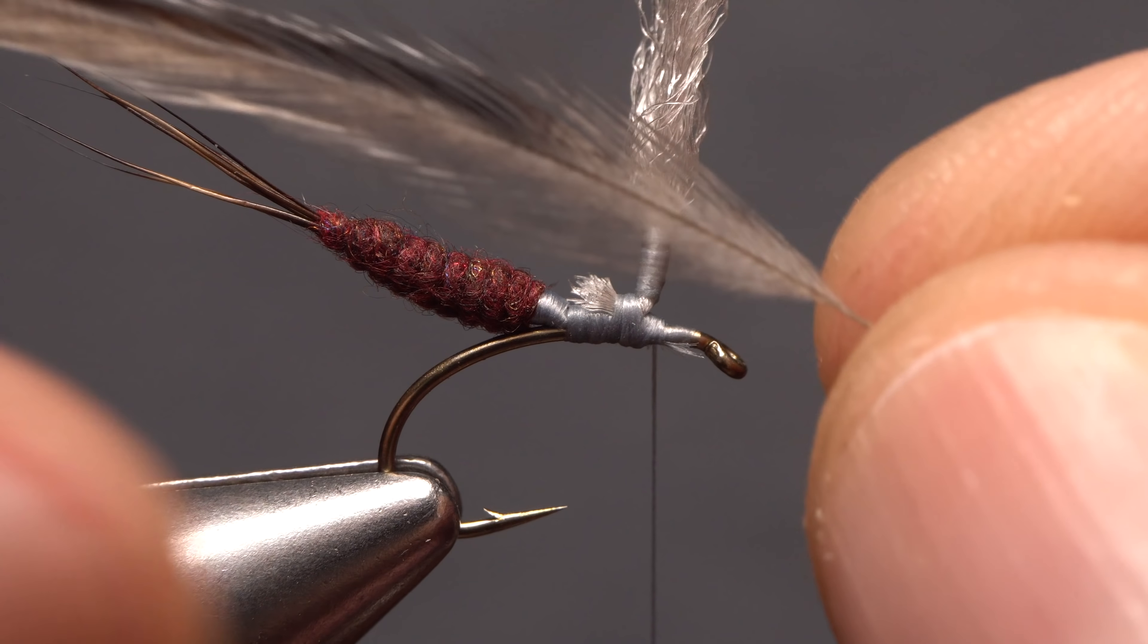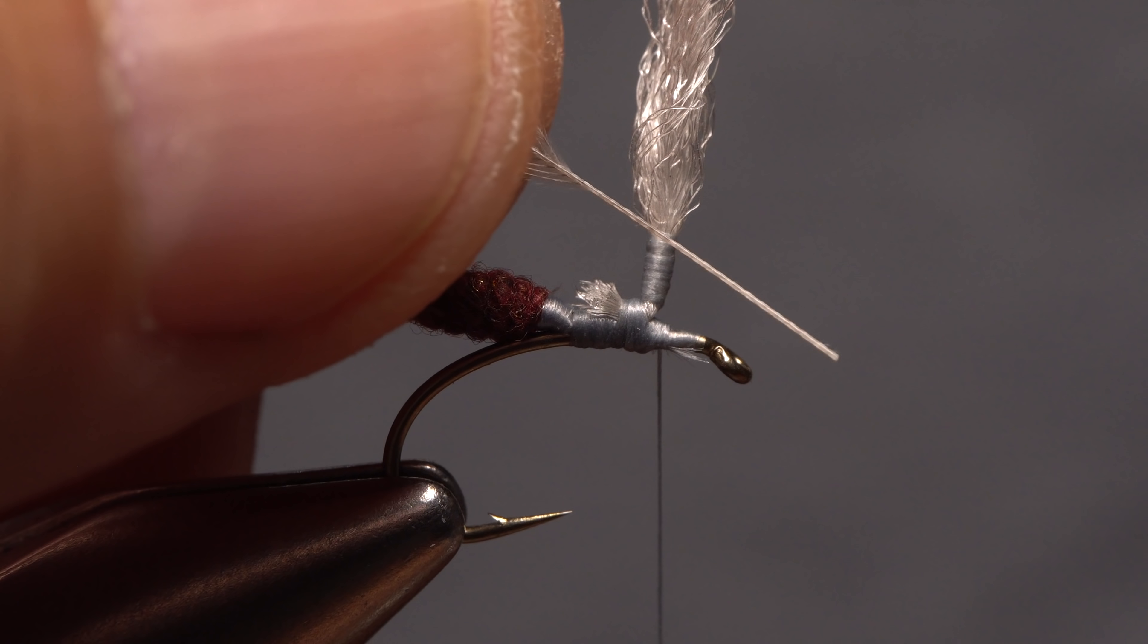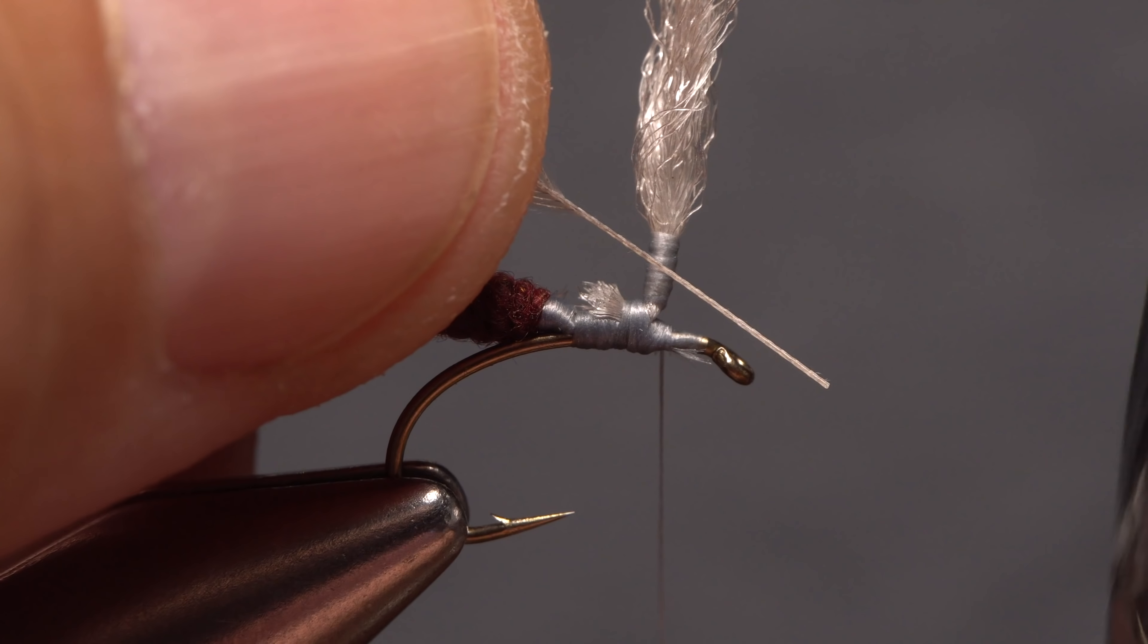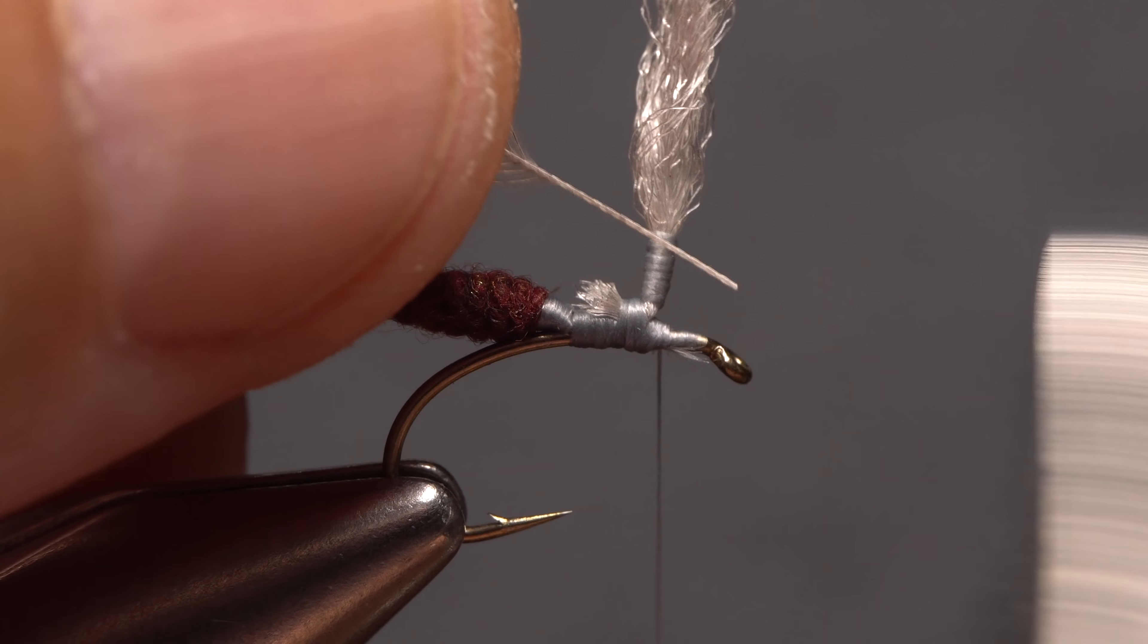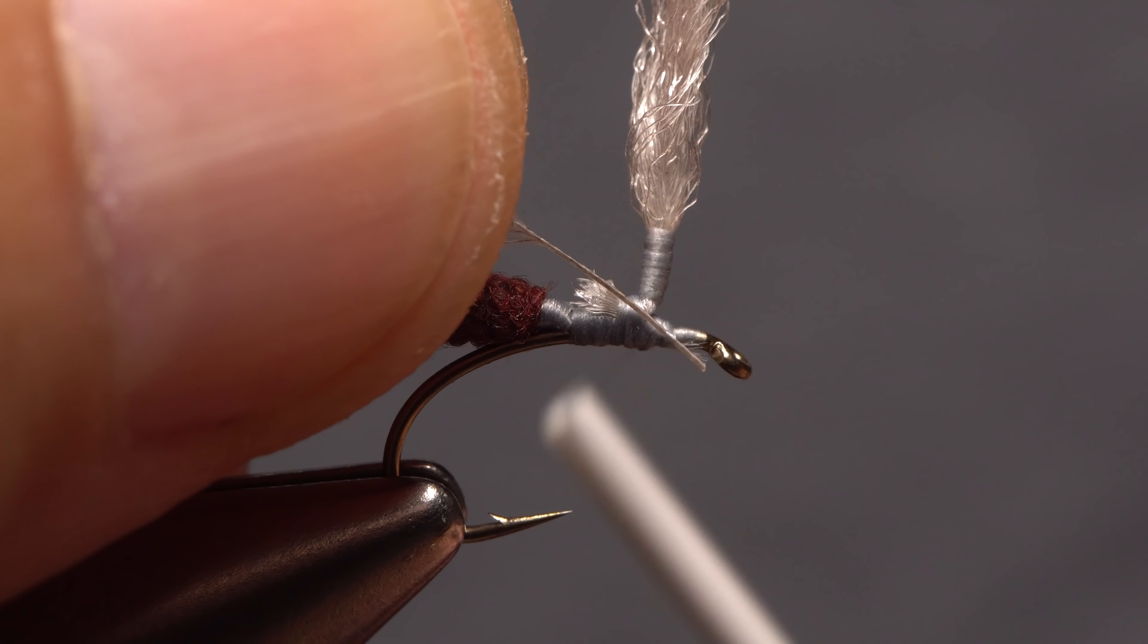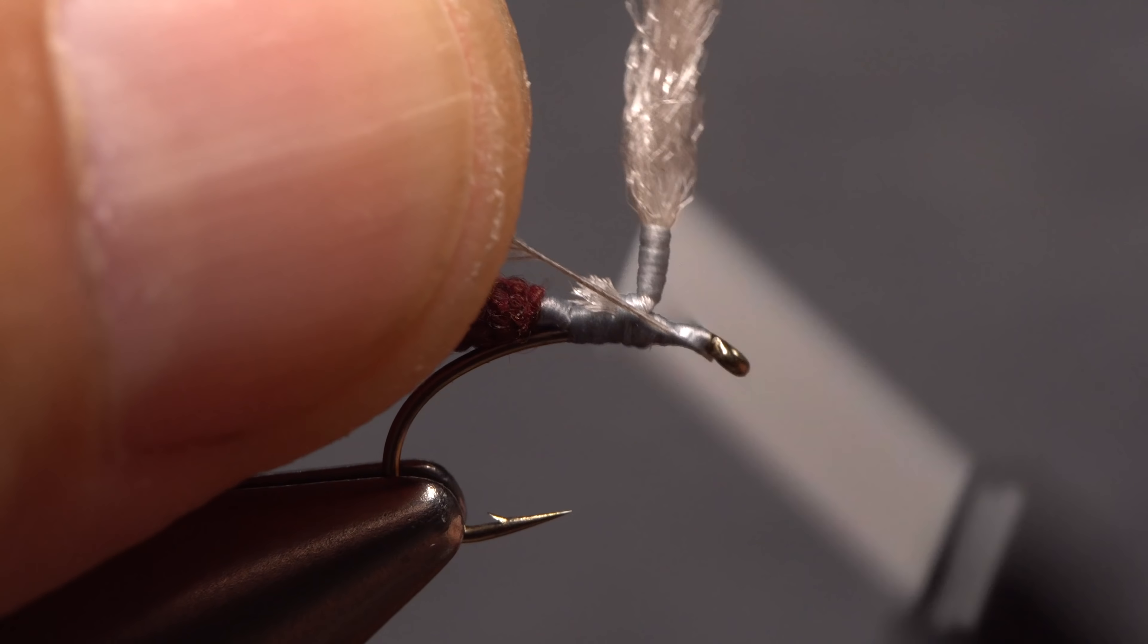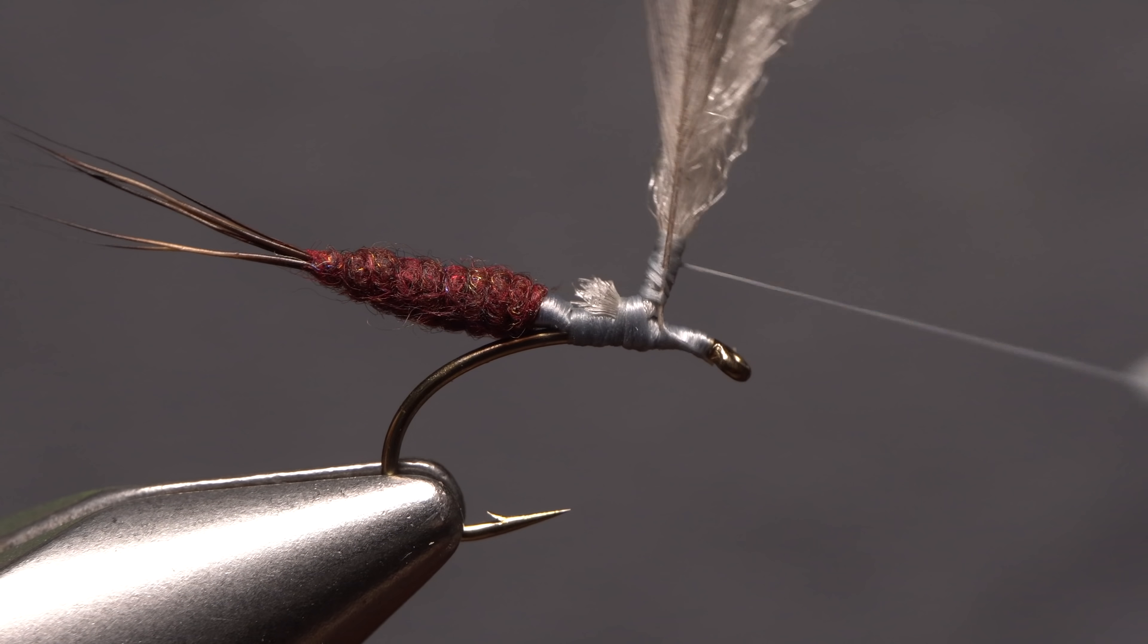After stripping off all the lower webby fibers from the stem, lay the feather with its dull side facing you at an angle against the post. Using the back edge of the hook eye as a guide, snip off any excess stem. Anchor the stem, first to the near side of the hook, then bring your tying thread around the wing post and take wraps up to anchor it there.